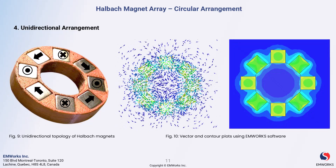Finally, we come to Case 4, where the magnets are arranged in both upward and downward orientations. In this configuration, the magnets alternate in magnetization — the upward magnetization is represented by the dot symbol, while the downward magnetization is indicated by the cross symbol.